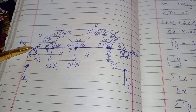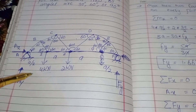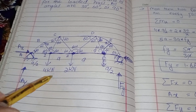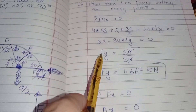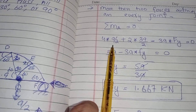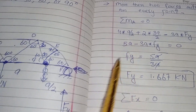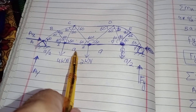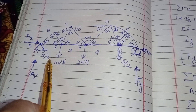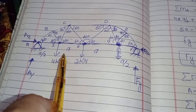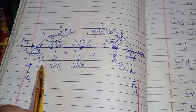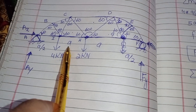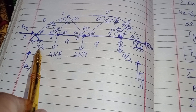Taking moment at point A equal to zero: the distance from A to I is a/2, and the load is 4 kilonewtons, so 4 × (a/2) — this is anti-clockwise, taking clockwise as positive. The 2 kilonewton load is at a distance of 3a/2 from A, so its moment is 2 × (3a/2) = 3a.